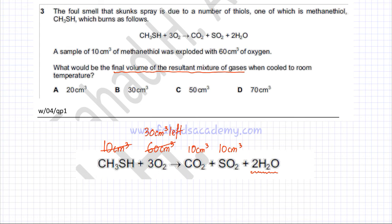If you count the total volume of gases, that's 10 cm³ of CO₂ plus 10 cm³ of SO₂ plus the 30 cm³ of O₂ that is left behind, and that would give you a total of 50 cm³. So the final mixture of gases would be 50 cm³.